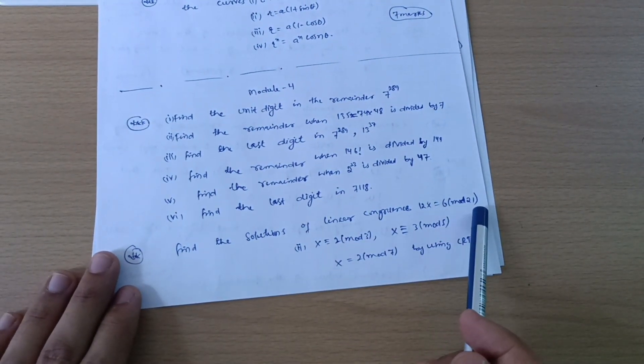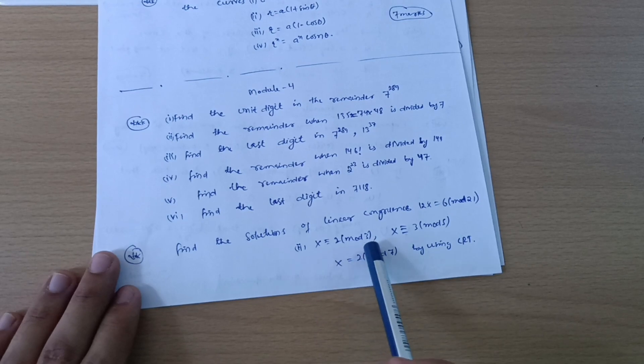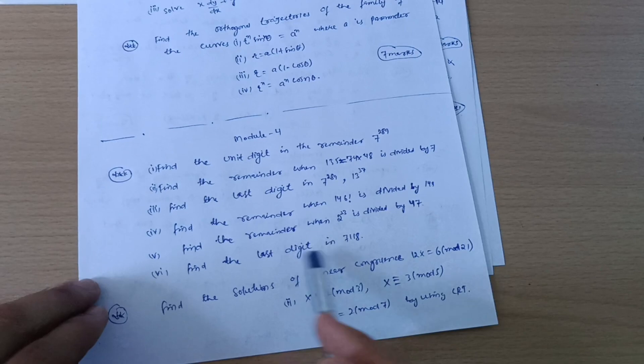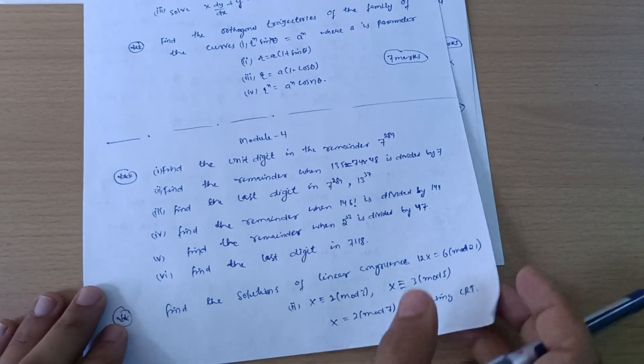Next is find the solutions of linear congruence 12x is equal to 6 mod 21, similarly x congruent 2 mod 3, x congruent 3 mod 5, x congruent 2 mod 7 by using CRT. These are the questions which you should refer from module 4.